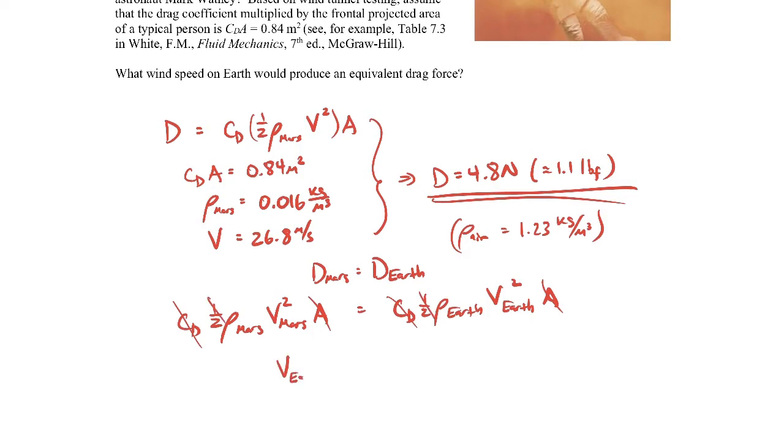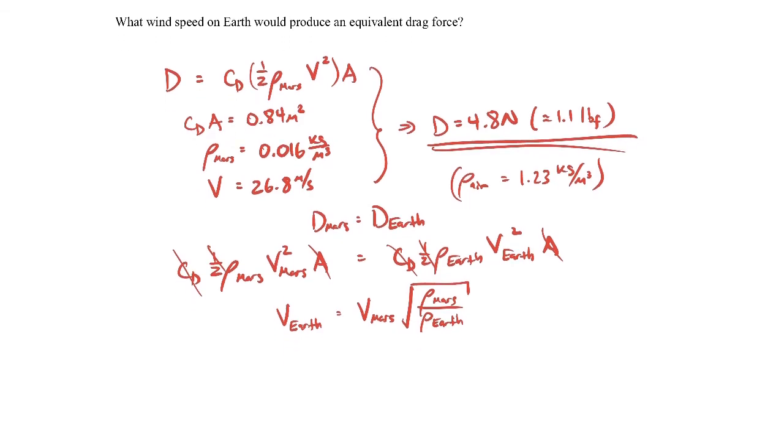So what we'll have is the velocity on Earth is equal to the velocity on Mars times the square root of the density on Mars divided by the density on Earth. If we plug in the numbers—the density on Mars given right here, density on Earth is right there, velocity on Mars is right up here—if you solve for the velocity on Earth to give us this 1.1 pound force, it comes out to be 3.1 meters per second, which is about 6.8 miles per hour.